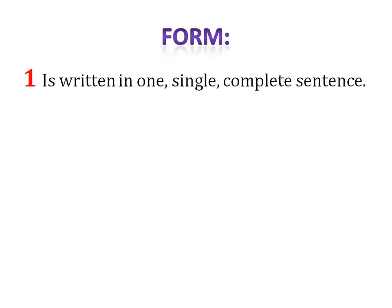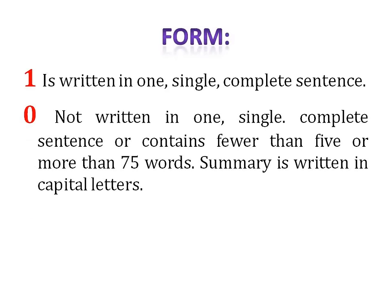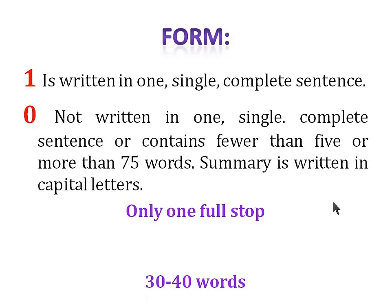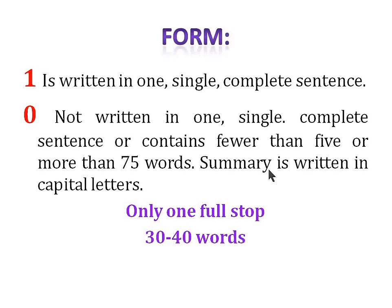Next is form. One mark is given if it's written in one single complete sentence. Zero marks if it's not written in one single complete sentence, contains fewer than five or more than 75 words, or is written in capital letters. Be careful with the full stop — make sure you have written one complete sentence and don't put a full stop accidentally when you meant to put a comma. Ideally, write 30 to 40 words. Don't make it too lengthy and don't make it too short.